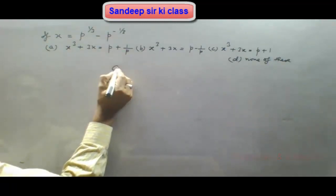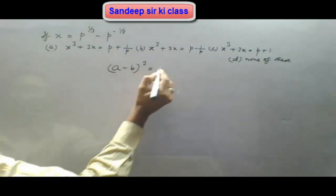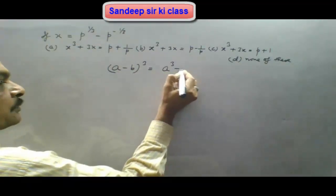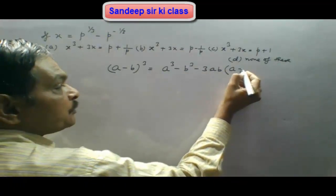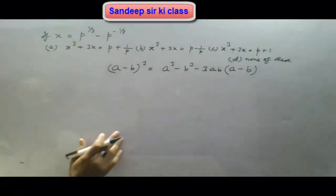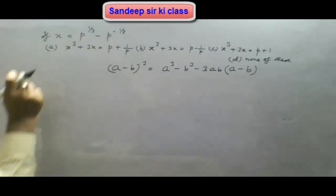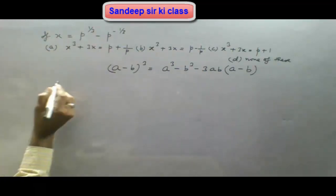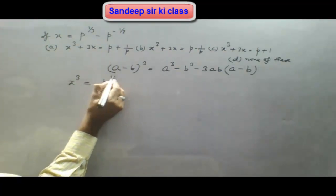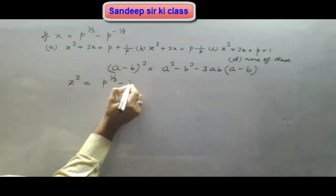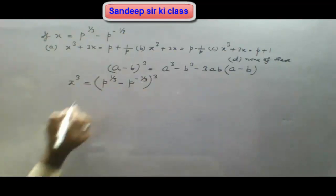We know that (a minus b) whole cube is a cubed minus b cubed minus 3ab(a minus b). This is the algebraic formula we should remember. Now we cube both sides of the given expression. So we get x cubed is equal to (p to the power 1/3 minus p to the power minus 1/3) whole to the power 3.